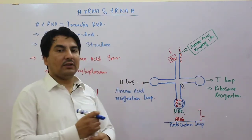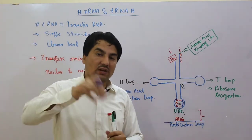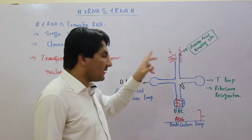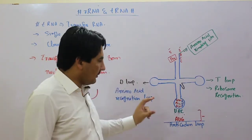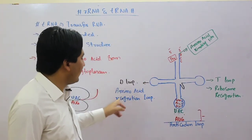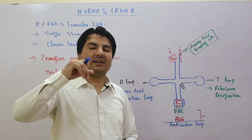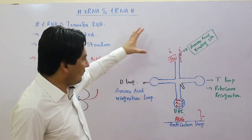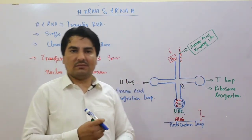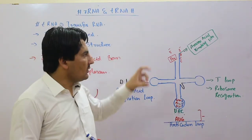Nucleus mein jo D-loop hai, wo wahan par us tarah ke amino acid ko dhundhega — search out kar leta hai. Jab wahan par search out ho jata hai, that amino acid will be bound with the free hydroxyl group at the three prime end. Amino acid kya hoga — wo attach ho jata hai.